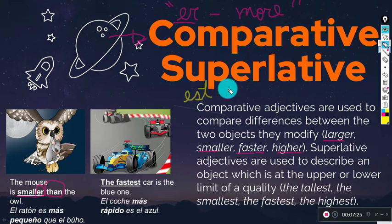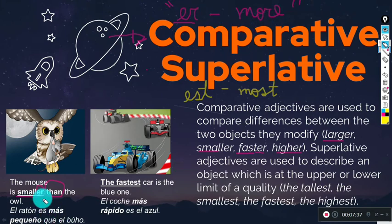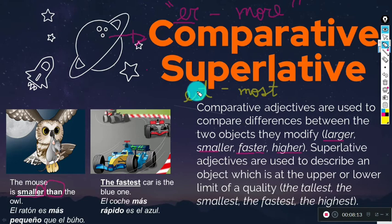With superlatives, we use the rule of '-est' or 'most.' An important note: 'more' is used with long adjectives (two or more syllables), while '-er' is used with short adjectives. For example, with 'expensive,' we say: 'The iPhone is more expensive than the Samsung cell phone.' With superlatives, we add '-est' for short adjectives and 'most' for long adjectives. Superlatives highlight one individual from a group.